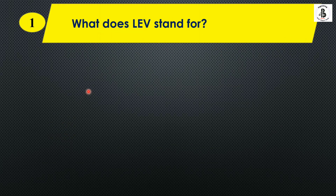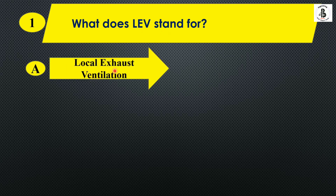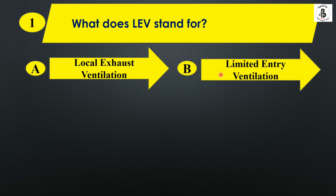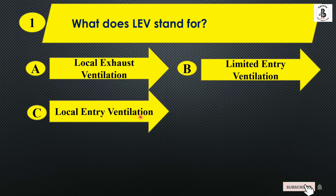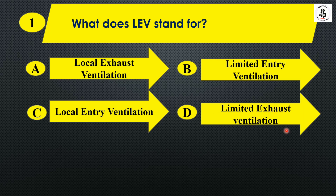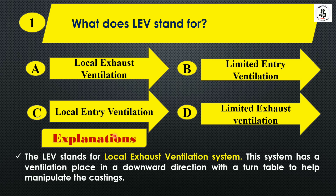Question one: What does LEV stand for? Option A: Local Exhaust Ventilation, Option B: Limited Entry Ventilation, Option C: Local Entry Ventilation, Option D: Limited Exhaust Ventilation. In the casting process, LEV stands for Local Exhaust Ventilation. This system has ventilation placed in a downward direction with a turntable to help manipulate the castings. The right answer is Option A.